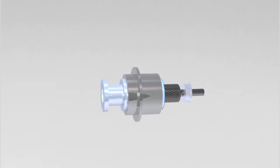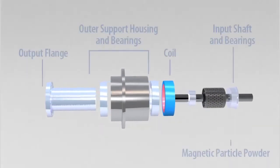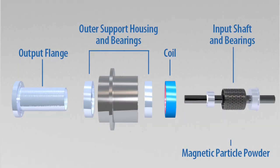The key components are the output flange, the outer support housing and bearings, coil, input shaft and bearings, and magnetic particle powder.